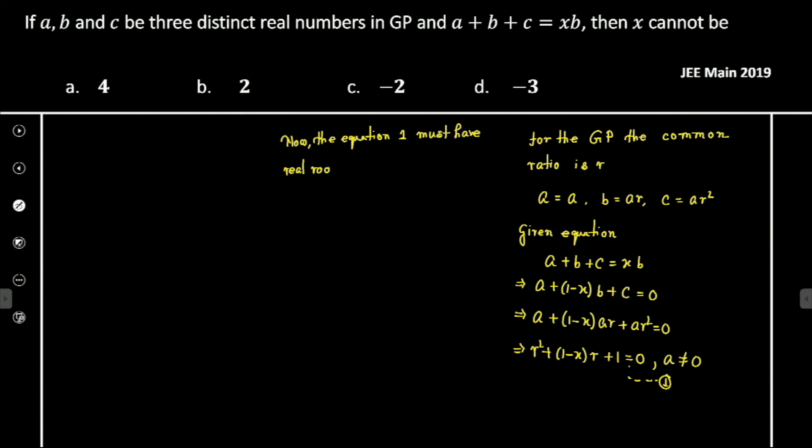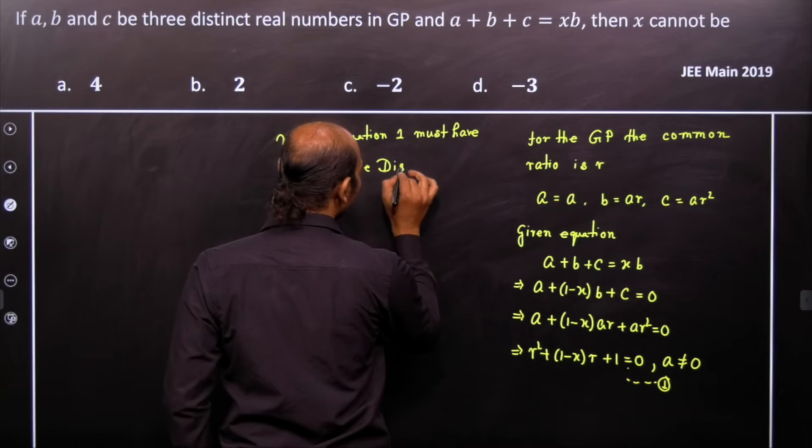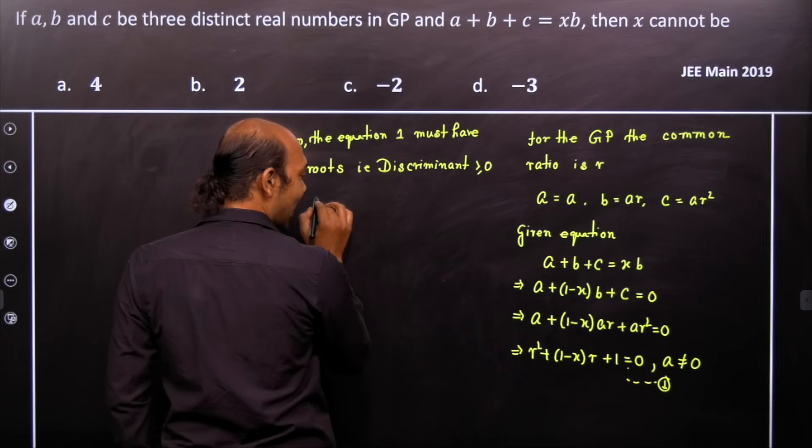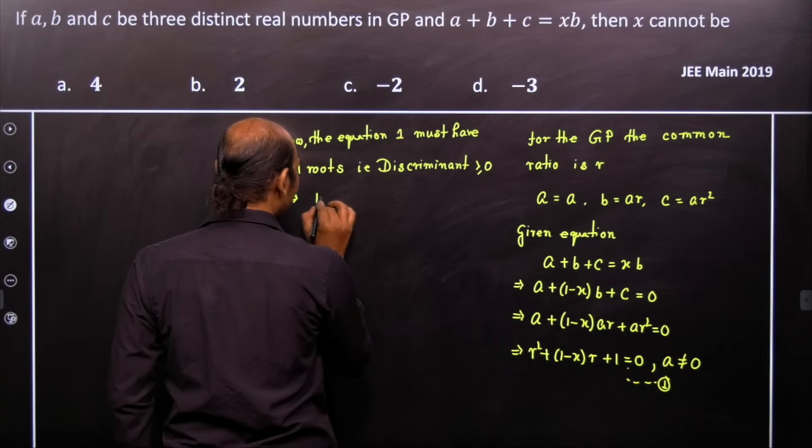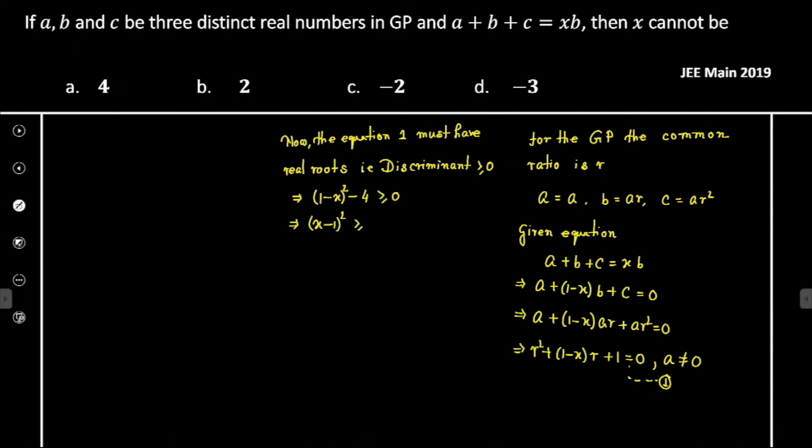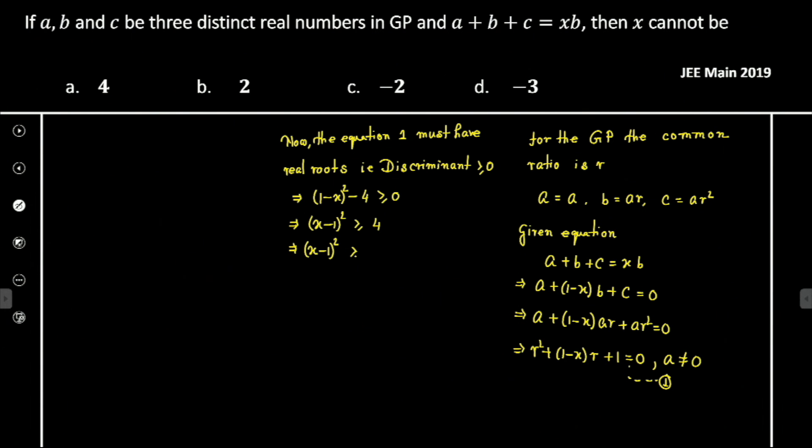Now, the condition for real roots is that the discriminant is greater than or equal to 0. What is the discriminant of this equation? It implies that (1 - x)² - 4 ≥ 0. Simplifying, (x - 1)² ≥ 4.